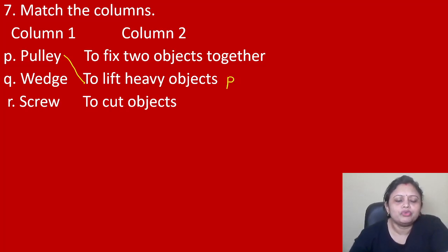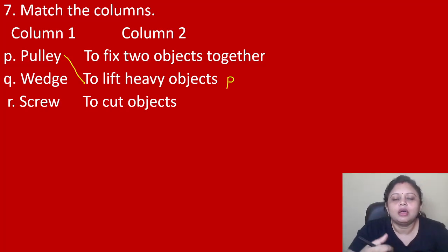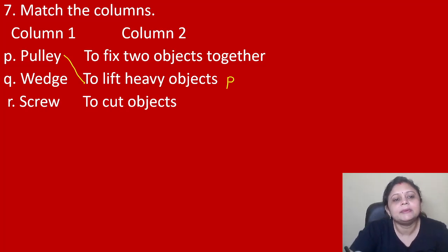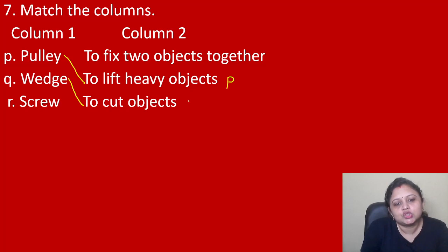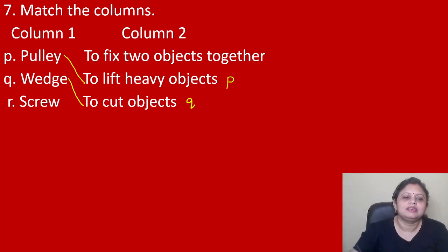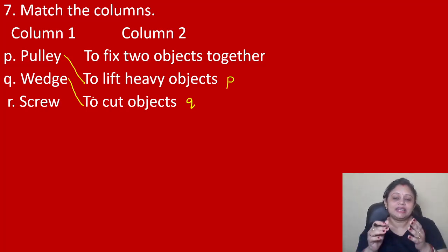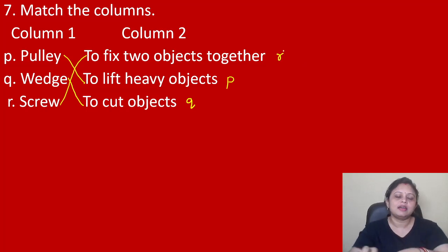Wedge — what do we do with a wedge? A wedge is two inclined planes joined together. Examples are a knife and an axe. We use them to cut objects, so wedge matches with 'to cut objects' — I can write Q. Next, screw — it fixes two objects together. Like the jar lid with the jar, we can fix them. So screw matches with 'to fix two objects together' — I can write I.